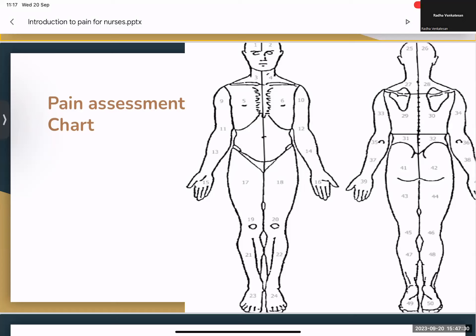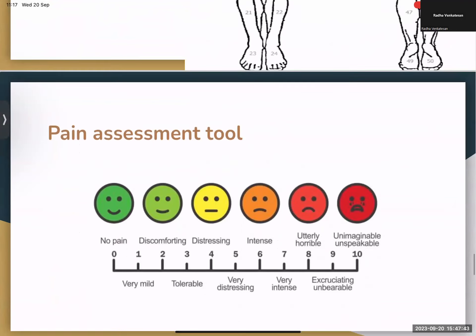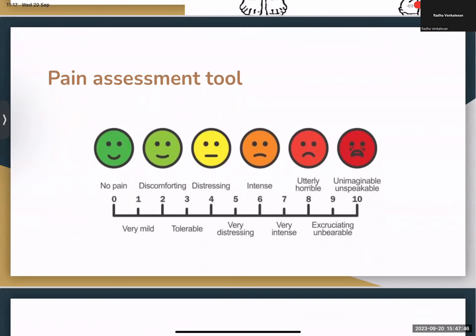These various tools — the facial representation, numerical scale, and descriptive words like mild, tolerable, distressing, very intense, excruciating, unbearable, and unimaginable pain — can all be depicted together in one combined assessment tool. These are basic tools that are helpful for anyone and everyone, not something highly complicated, and showing them helps patients feel comfortable indicating their areas and levels of pain.